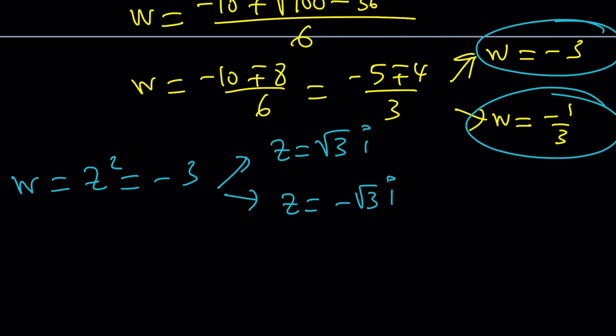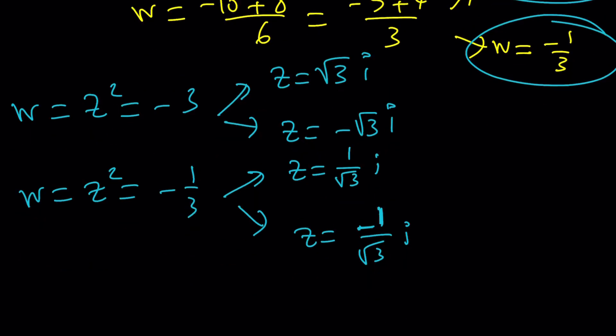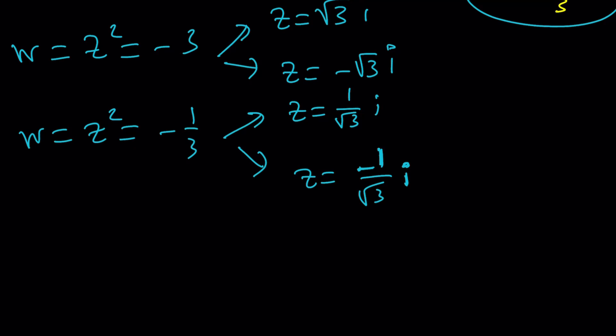And if you want you can call these Z sub 1, Z sub 2, whatever. And the other W value is negative 1 third. Same idea. Z can be written as 1 over square root of 3i and the opposite of that. There are always two numbers whose square equals a non-zero number. So those are the solutions. That's it. Pretty much done. Case closed. Let's go ahead and take a look at the second method real quick.